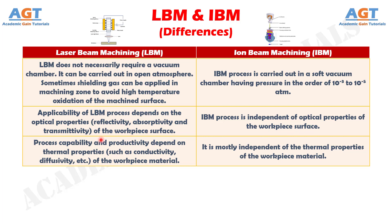Number 8. In laser beam machining, process capability and productivity depend on thermal properties, such as conductivity, diffusivity, etc., of the workpiece material, whereas ion beam machining is mostly independent of the thermal properties of the workpiece material.